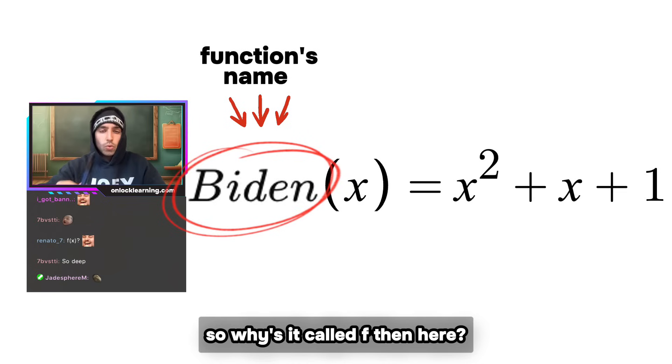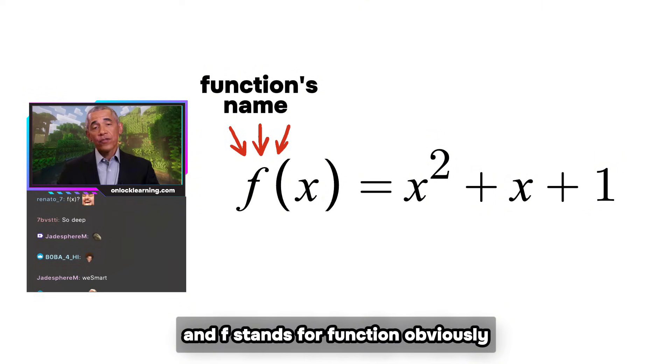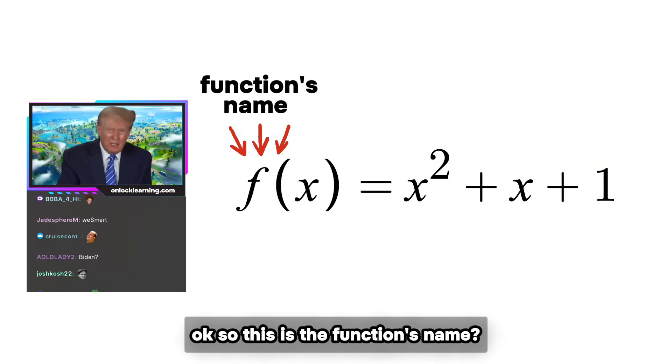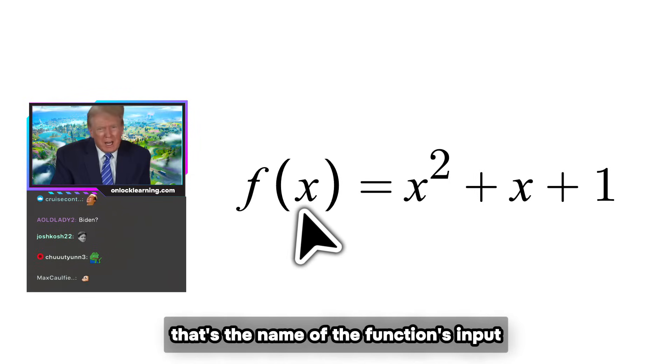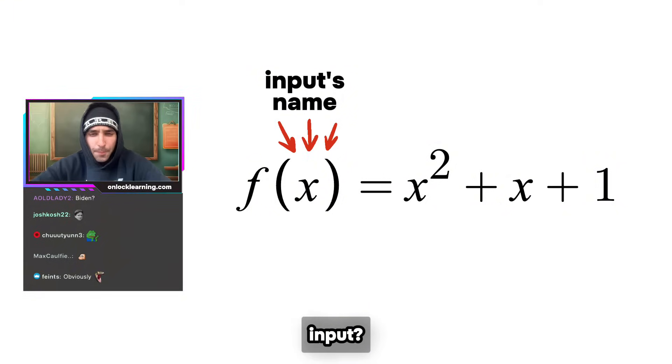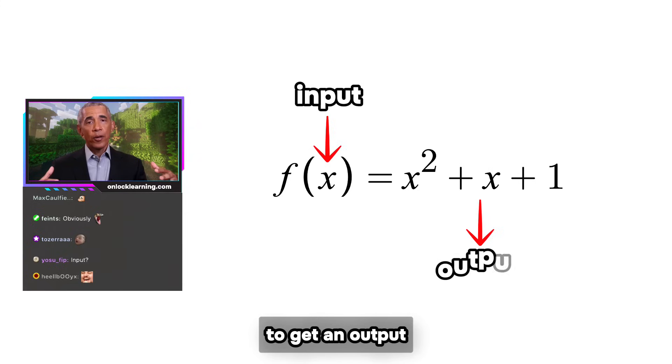So why is it called f then here? Well, it's a nice and short name and f stands for function, obviously. Okay, so this is the function's name, but what's the x in the brackets? That's the name of the function's input. Input, input—it's what you put in to the function to get an output.